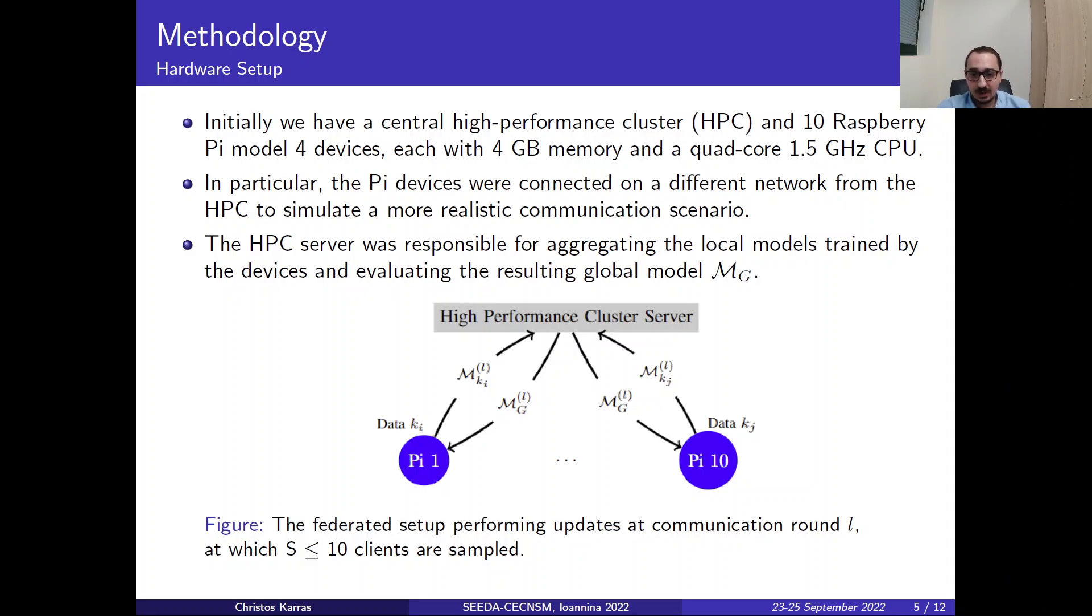In particular, the Pi devices were connected on a different network from the HPC in order to simulate a more realistic communication scenario where latency and other factors played a major role. The HPC server was responsible for aggregating the local models trained by the device and evaluating the result of the global model MG.